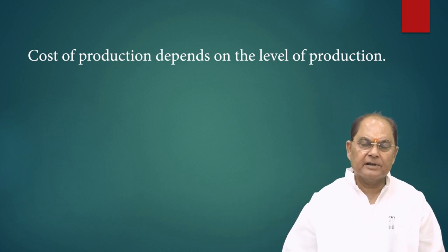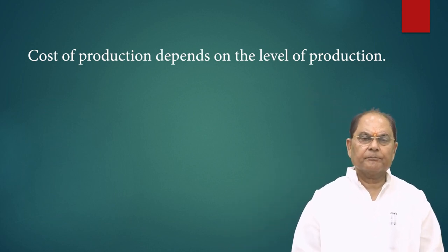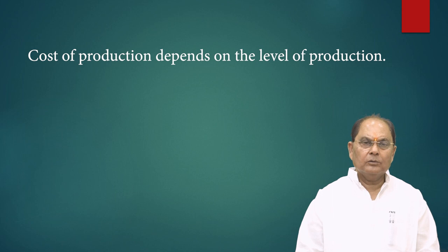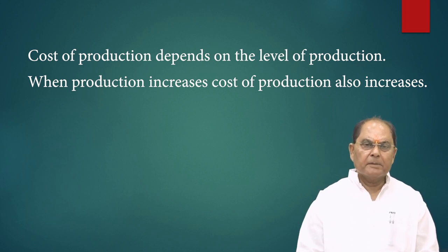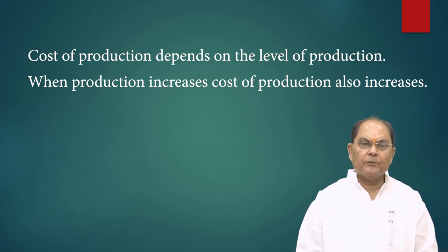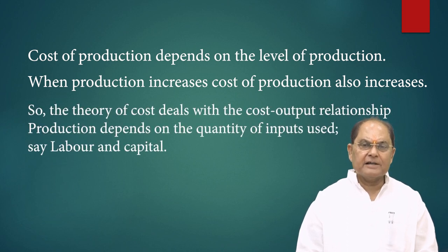Cost of production depends on the level of production. If the level of production is low, the cost of production is going to be higher. If the level of production increases, cost of production is going to be lower. But beyond a certain point, cost of production starts increasing. So when production increases, cost of production also increases, and the theory of cost deals with the cost-output relationship.